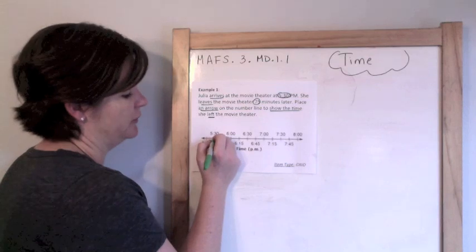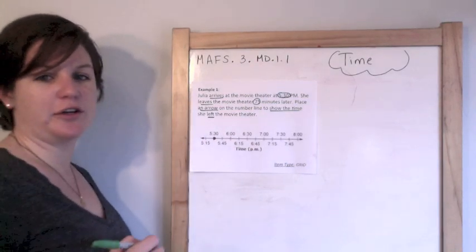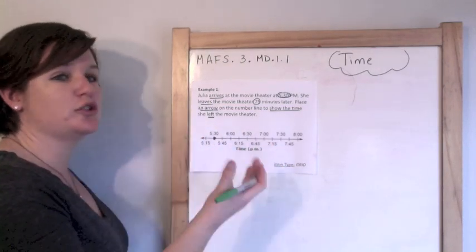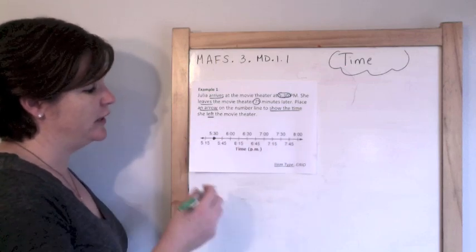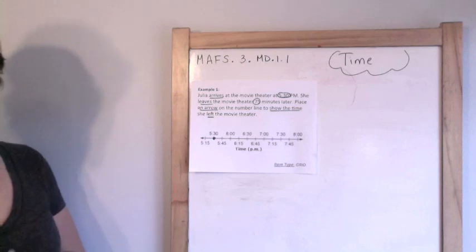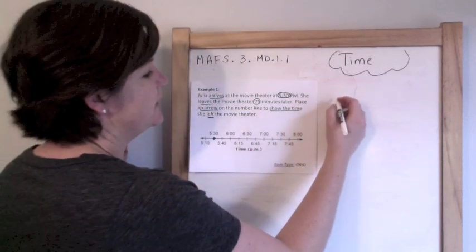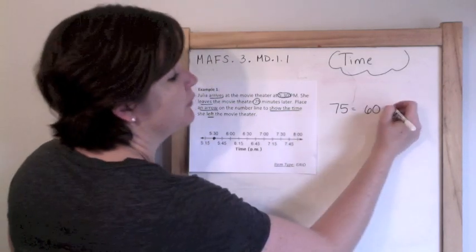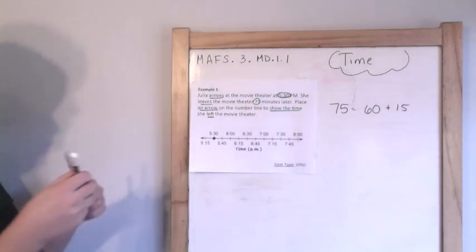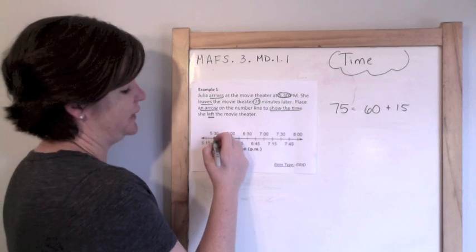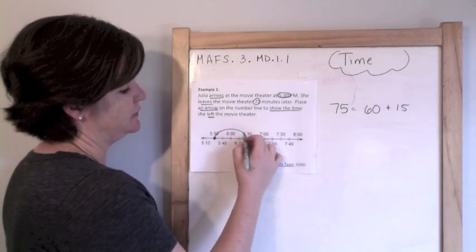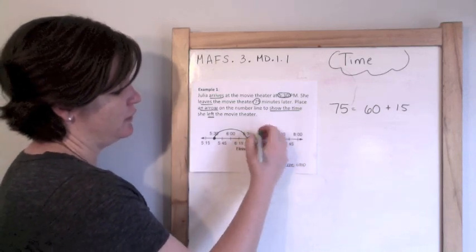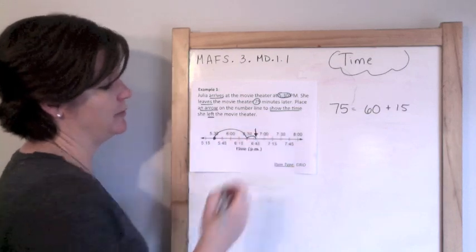So here's where she started at 5:30 p.m. This is a grid item, which means you'll have to use this graphic feature to show your answer. It's a number line with time, and I know she was there for 75 minutes. The way I would break it down would be 60 minutes, which is an hour, plus 15. So I'm going to go 60 minutes — an hour after 5:30 would be 6:30 — and then 15 minutes later, 6:30 plus 15 would be 6:45. So I'm going to put my arrow right there.